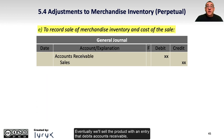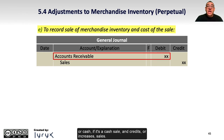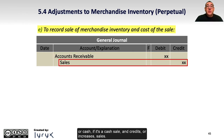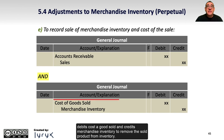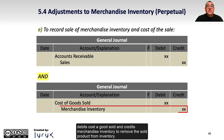Eventually, we'll sell the product with an entry that debits accounts receivable, or cash if it's a cash sale, and credits or increases sales. Don't forget that we must match the cost of goods sold against the sale with an entry that debits cost of goods sold and credits merchandise inventory to remove the sold product from inventory.